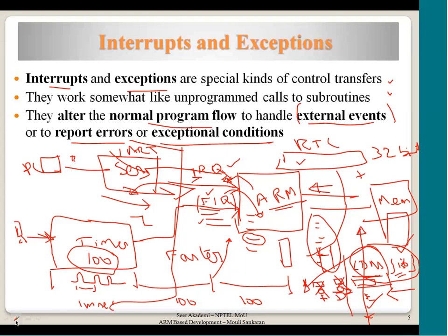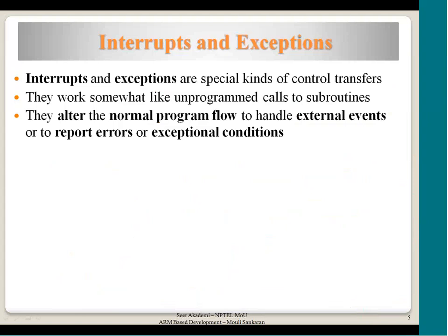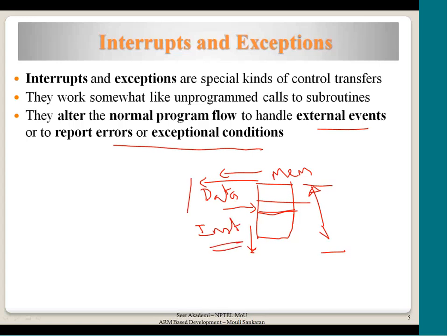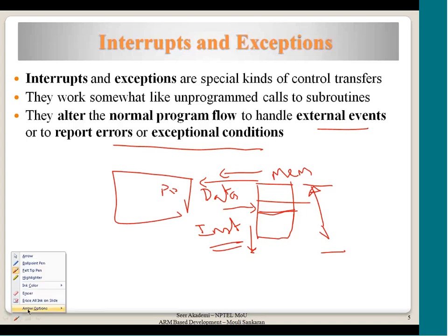For errors: when the processor is fetching an instruction it may encounter an error — for instance, it may try to access beyond the physical memory limit, and the memory system responds with an error. Similarly, a data access problem while accessing an instruction or data causes an exception. These are called exception conditions — generated by something being done by the processor itself, related to instruction execution.